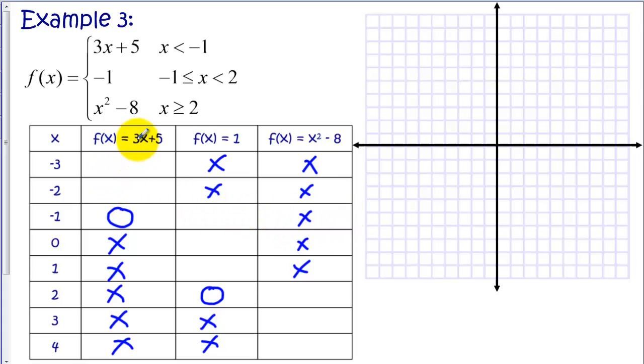So let's start plugging in. So if I plug -3 in here, I've got -4. -2 in here, I get -1. And if I plug -1 in, I have positive 2. Now let's do this function. It's a constant function, so its value will be 1.